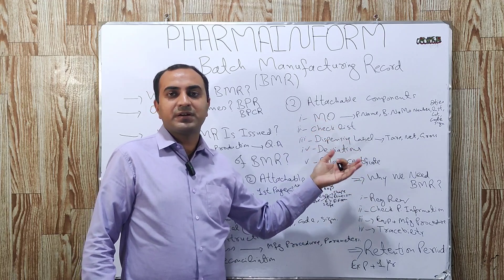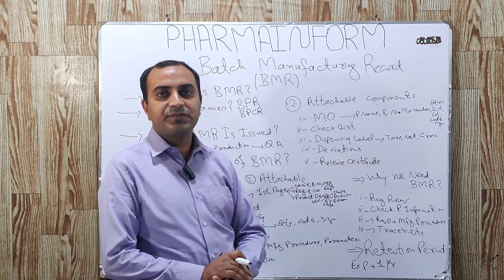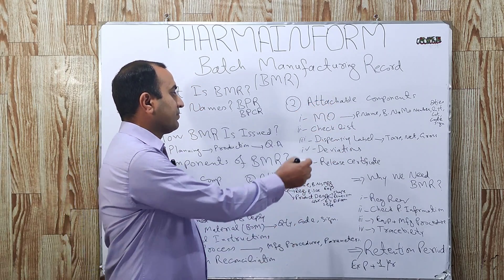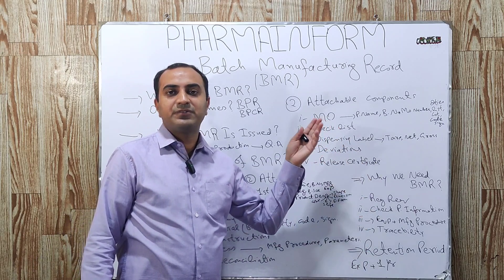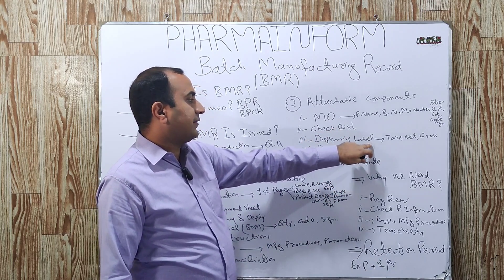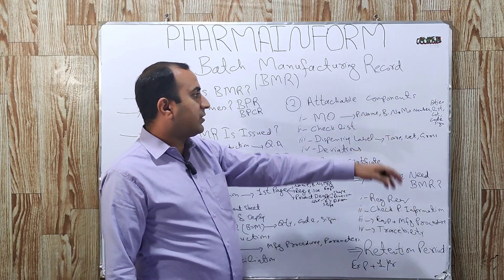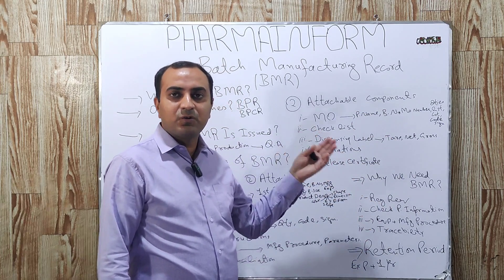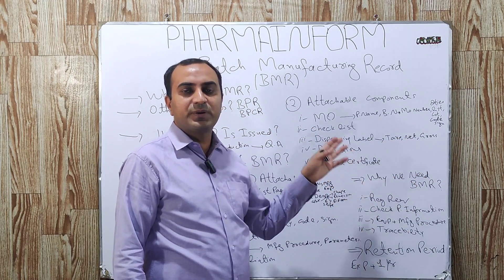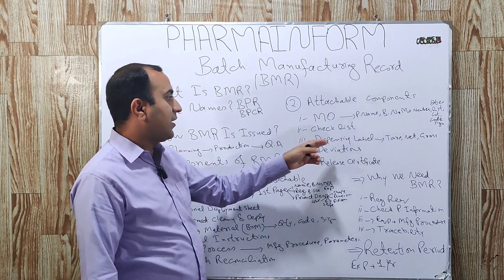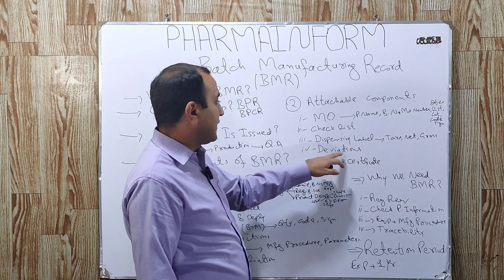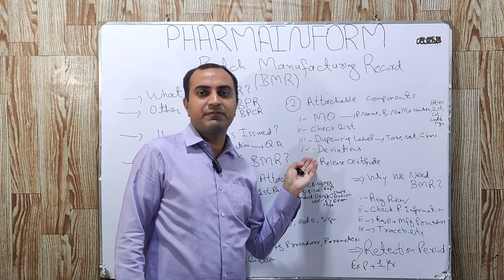The next attachable components are checklists, which are basically line clearance checklists. These are attached to the BMR — like dispensing checklist, granulation checklist, compression checklist, and coating checklist. All these checklists after line clearance are attached to the BMR. Next are dispensing labels, which are also important critical components of the batch manufacturing process. These include severe and critical information related to the product — quantities of the main excipient or API, lot number, code number, along with tare, net, and gross weight. These dispensing labels are also attached to the BMR after being removed from the polythene bags.